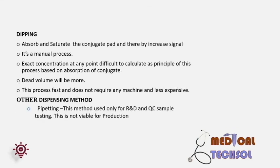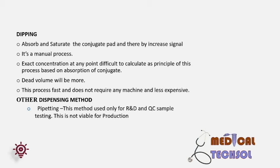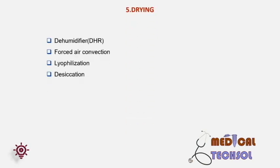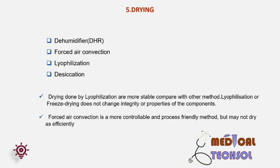Other dispensing methods include pipetting, which is only for R&D or QC sample testing and not viable for production. Drying — conjugate drying is a critical factor, done by: 1. Dehumidifier (DHR) method — sample is kept in a DHR room to dry. 2. Forced air convection — more controllable and process-friendly but may not dry efficiently. 3. Lyophilization or freeze drying — more stable compared to other methods and does not change the integrity or property of the component; however, samples are loosely bound to the pad after drying, requiring extra care. 4. Desiccation — time consuming and hence not suitable for production.